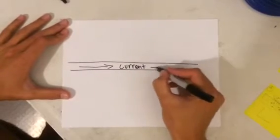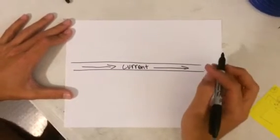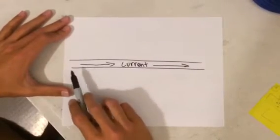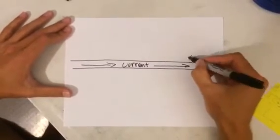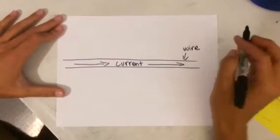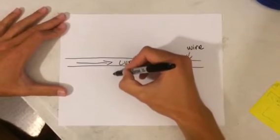One of the basic characteristics of electromagnetism is that when you have current flowing through a wire, a magnetic field is built around it.